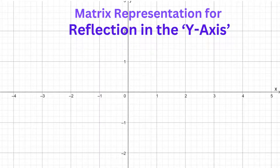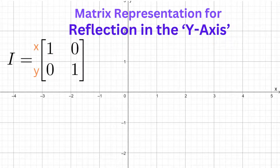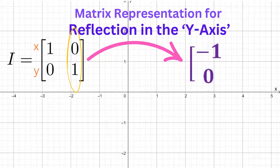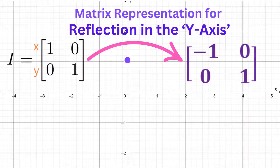Now let's derive the transformation matrix for a reflection in the y-axis. Again, we'll get the reflection matrix by tweaking the identity matrix. The values in the first column represent the point (1, 0). Reflect this point in the y-axis, and we get (-1, 0), so the first column in the transformation matrix will be (-1, 0). The second column represents the point (0, 1). Reflect that in the y-axis, and it remains as it is, so the second column in the transformation matrix is (0, 1).